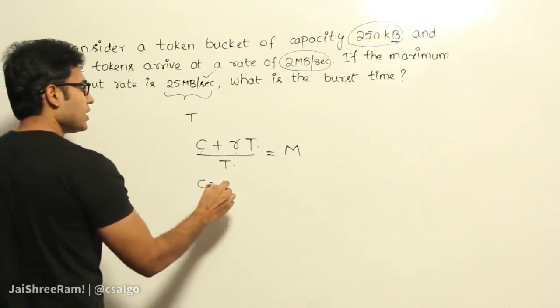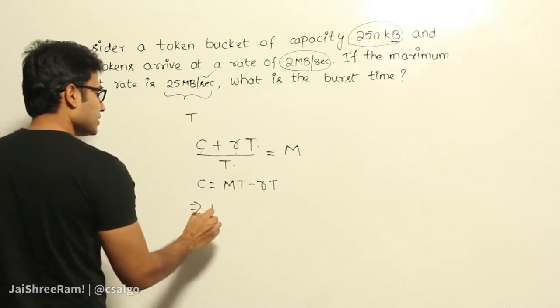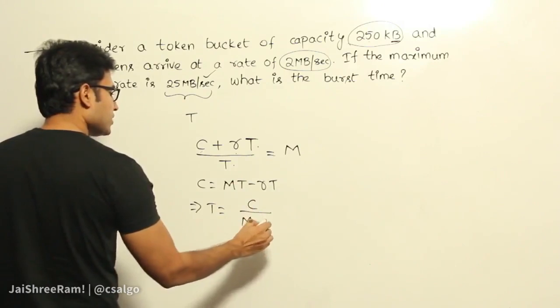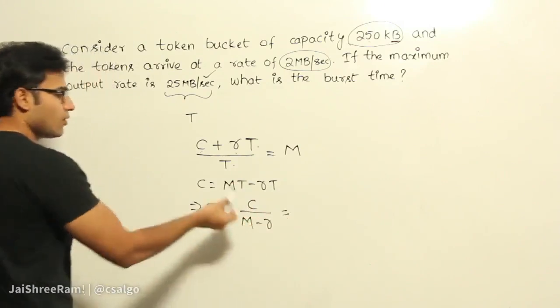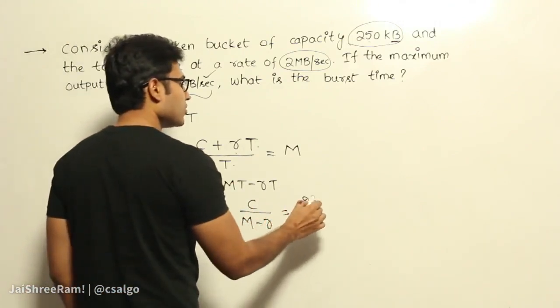So C equals M times T minus R times T. That implies T equals C by M minus R. Now what is C? C is initial capacity. So if all are in the same units, no problem.